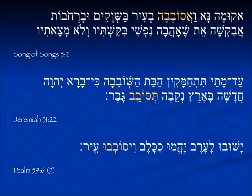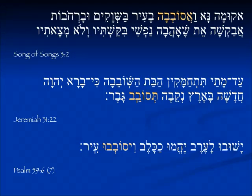Here are some examples from Song of Songs 3:2: Akuma na va'asavavah ba'ir ba'shvakim — I will get up and I will go around the city in the marketplaces. You know what a shuk is — the plural of shuk is shvakim. Both these verbs, akuma and asavavah, have this hay on them. This is hay hatinuah, the hay of movement. Whether it's on a noun or on a verb, in Israeli grammar they call it hay hatinuah and don't distinguish between noun and verb.